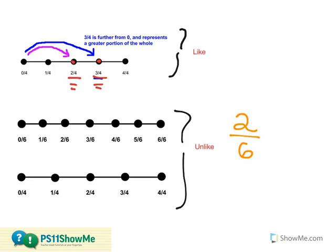I can do that by showing zero-sixths, one-sixth, two-sixths, three-sixths, four-sixths, five-sixths, and six-sixths, which is the same as a whole. Then I can locate the two-sixths along this number line, and reason that distance from zero.